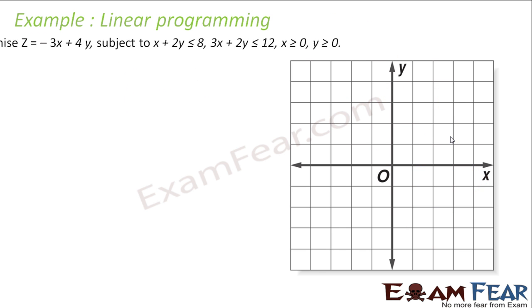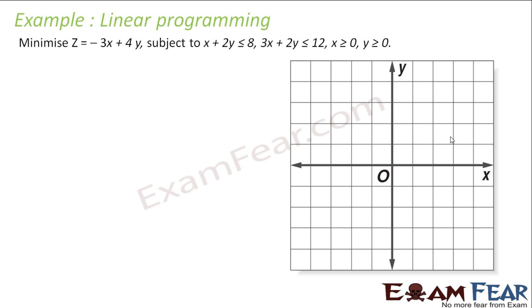Let us take one more example. We have to maximize z equal to minus 3x plus 4y, subject to the conditions: x plus 2y is less than 8, 3x plus 2y is less than 12, x is greater than 0, and y is greater than 0.